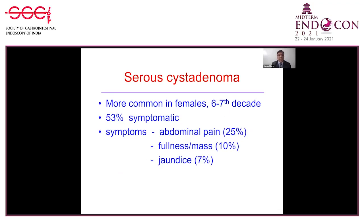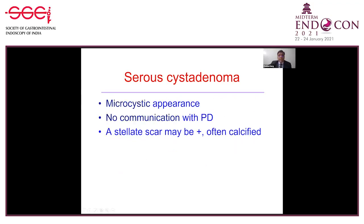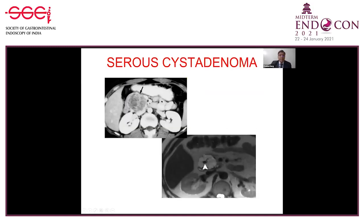Coming to serous cyst adenoma — this is more common in females, mainly seen in the sixth and seventh decade of life. About half of these are asymptomatic. The most common symptoms include abdominal pain, fullness in the upper abdomen, and sometimes jaundice. The typical appearance is a microcystic lesion. There is no communication with the pancreatic duct. A stellate scar may be present, which may often be calcified — this is the typical appearance on CT and MRI. You can see the central stellate scar.